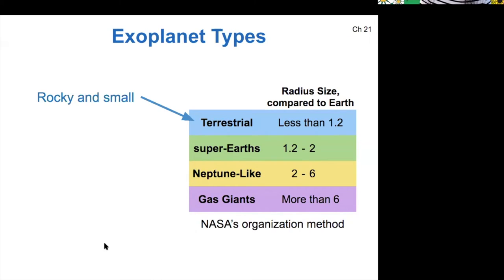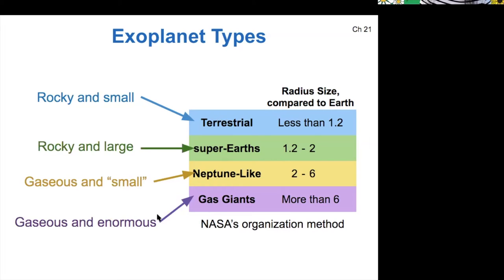So in general, though, we would say that we expect terrestrial planets with this radius size to be rocky and small. We would expect Neptune-like planets to be gaseous and sort of small, as compared to gas giants, which would be gaseous and enormous. And then super-Earths are basically rocky and large, hence their name.